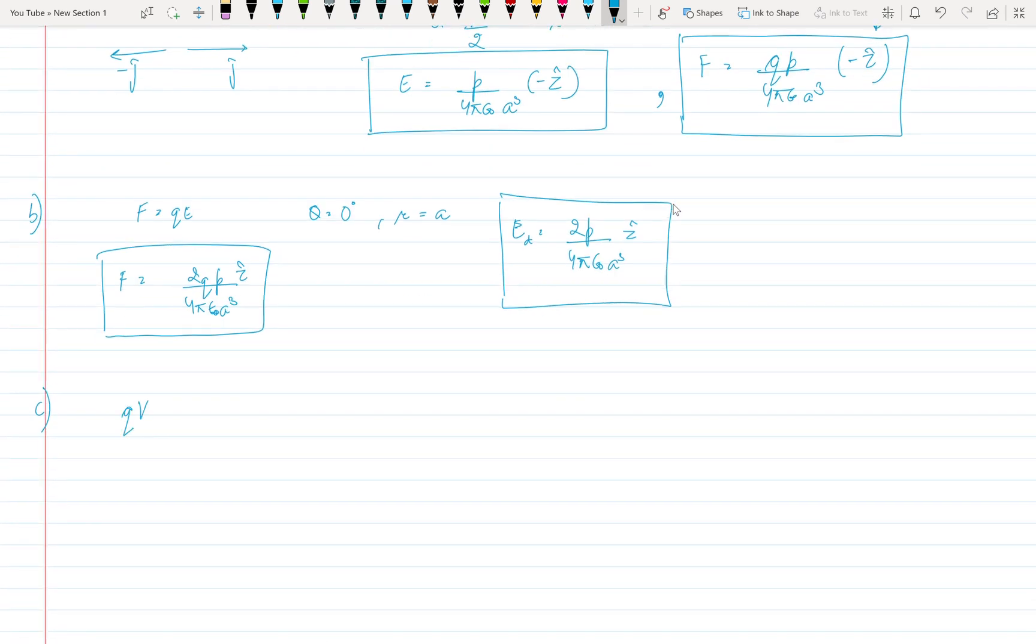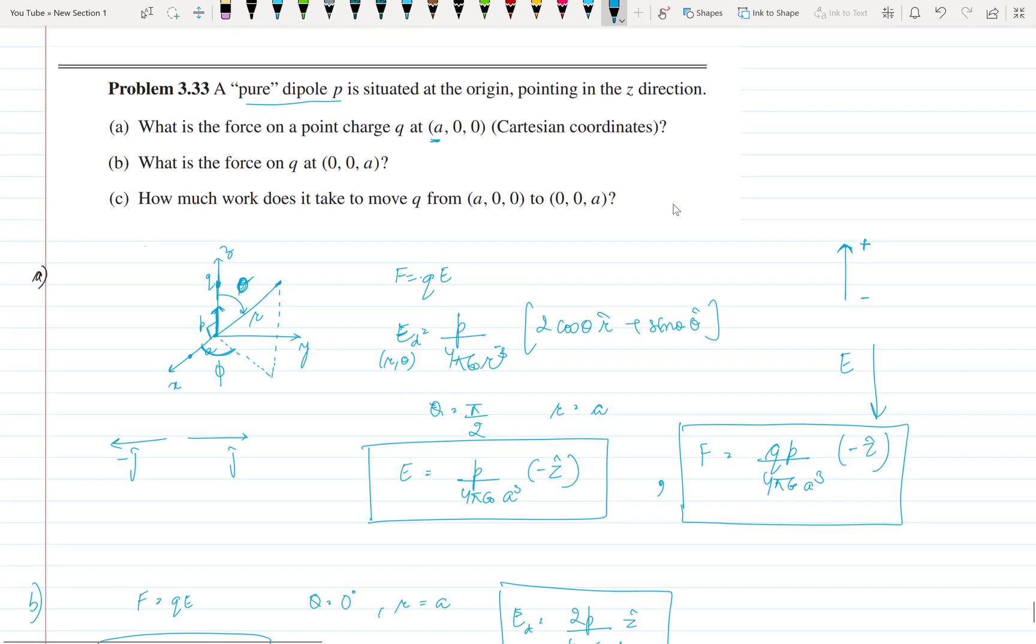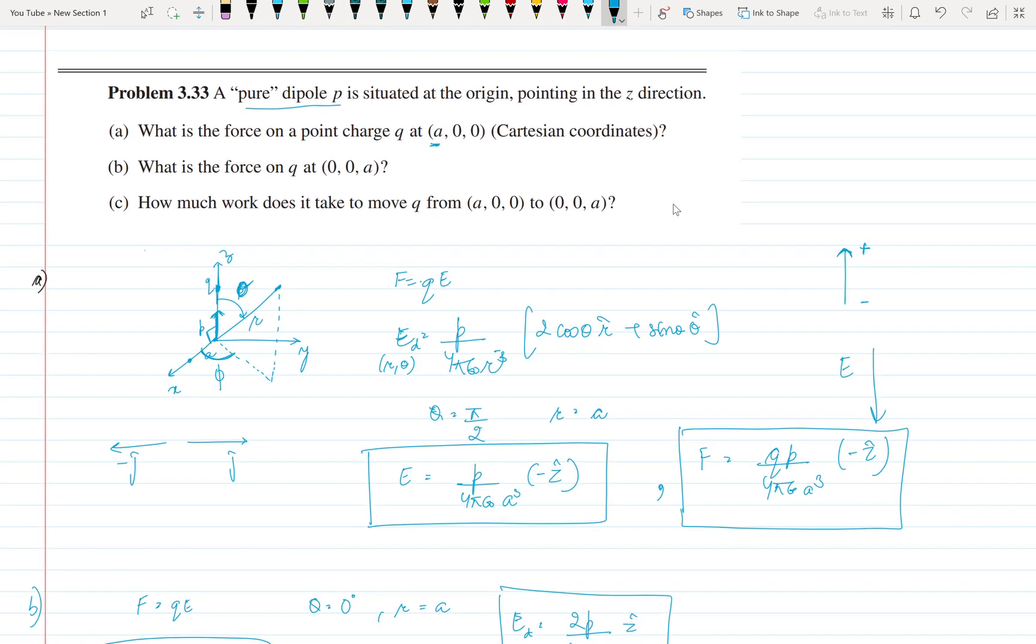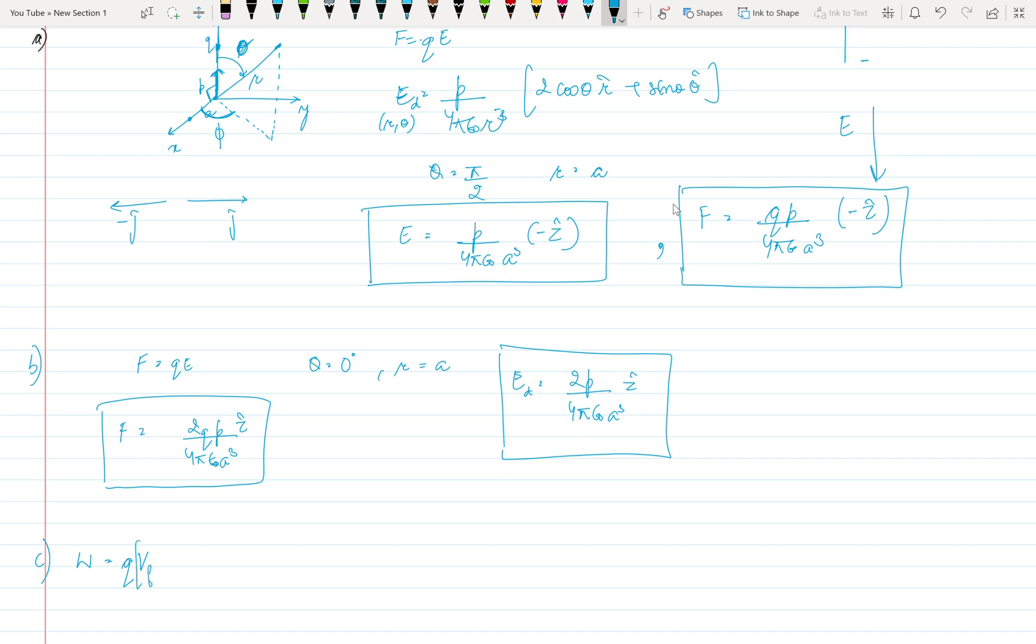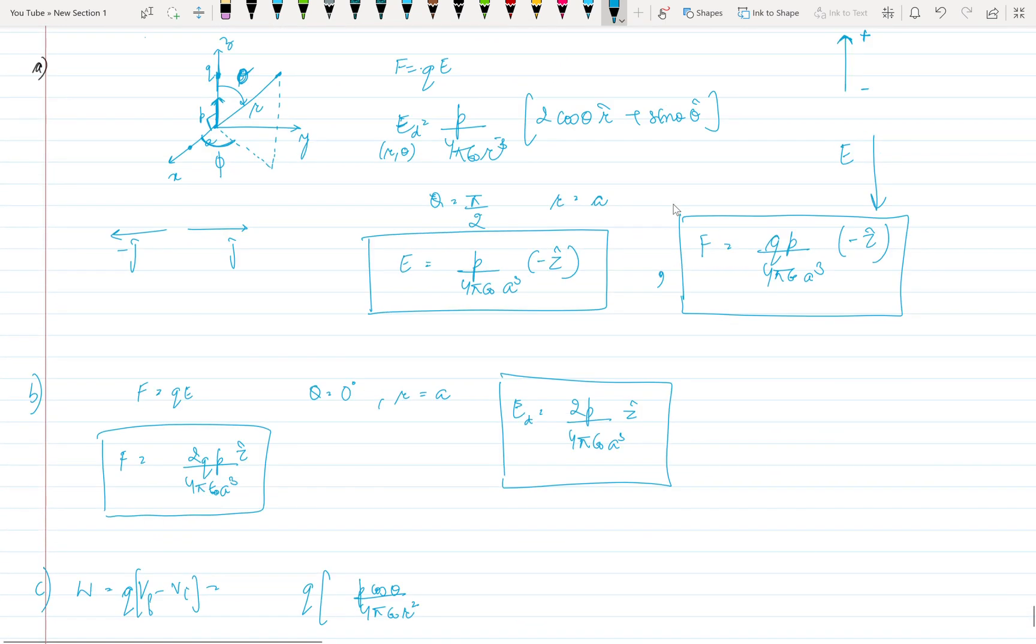Now coming to part C: how much work done? So work done, we know that Q into E cos theta. And first of all what is cos theta upon 4 pi epsilon naught r square.